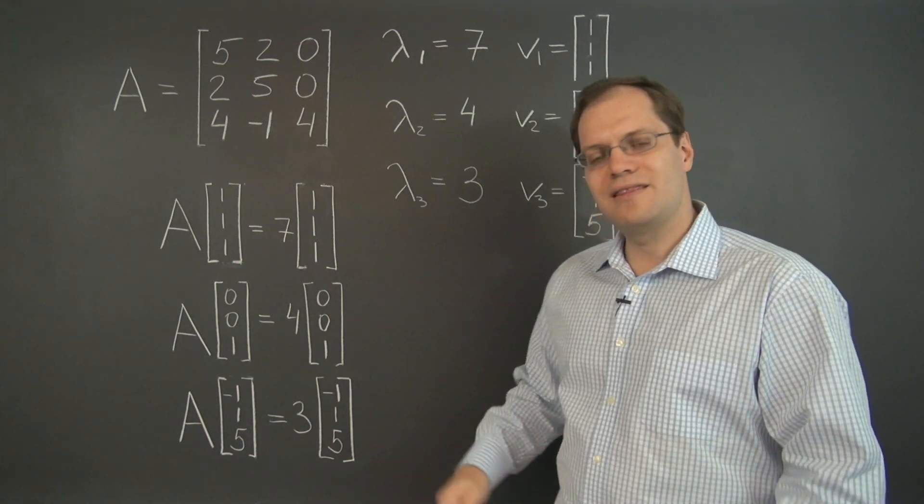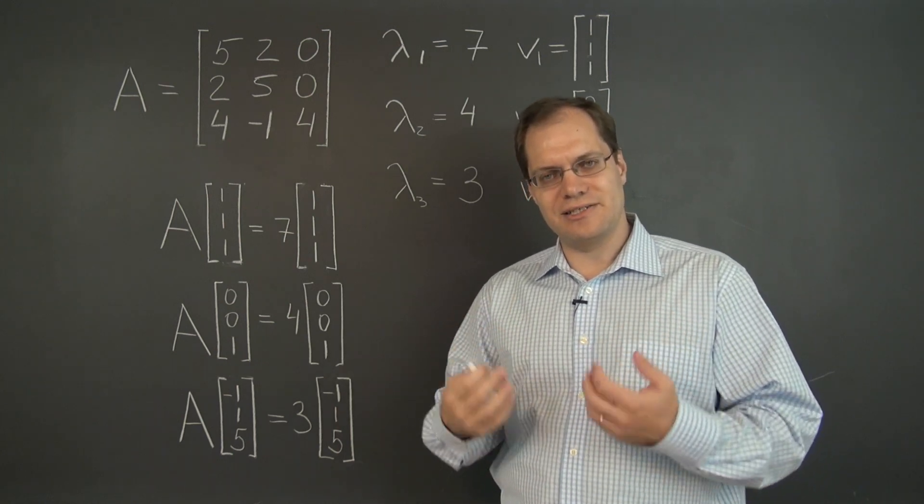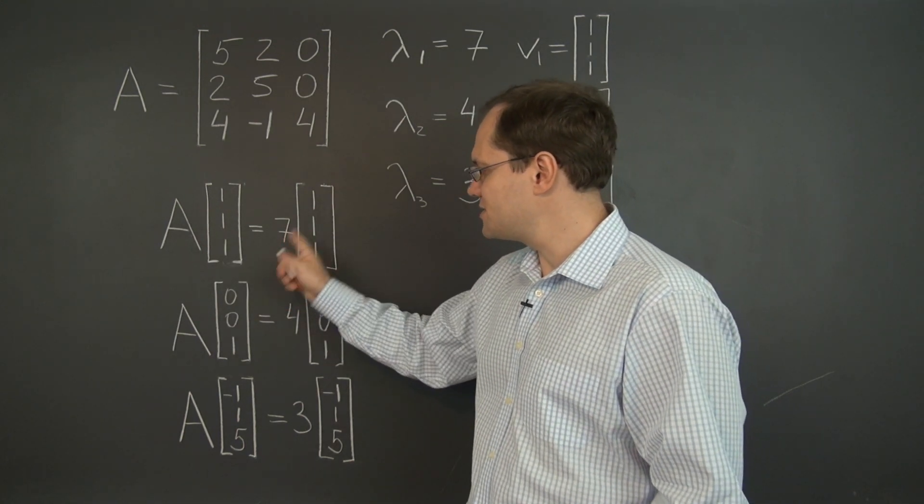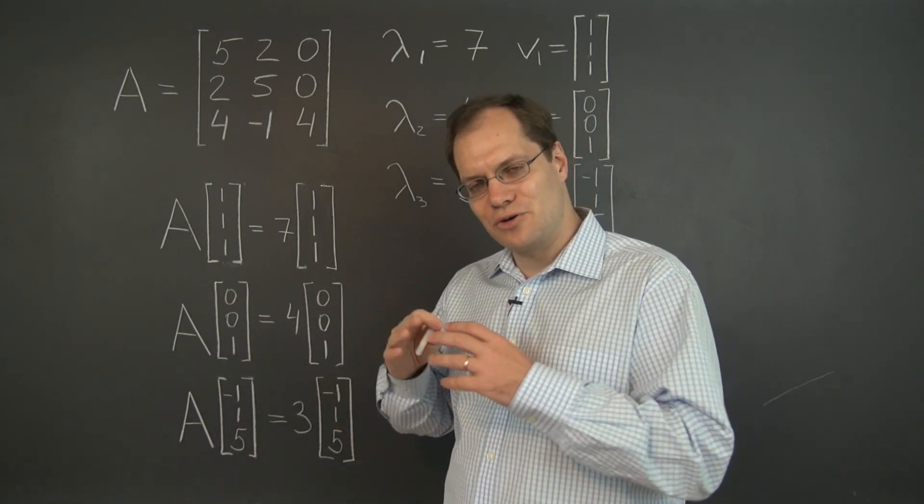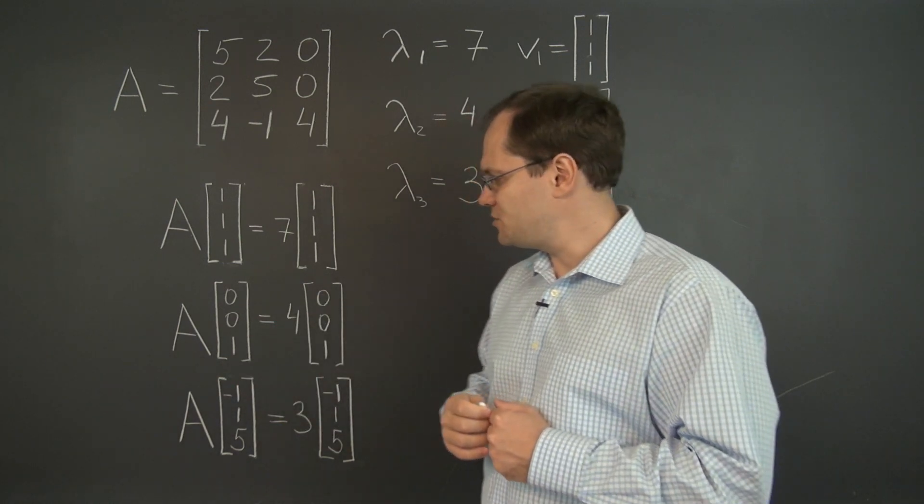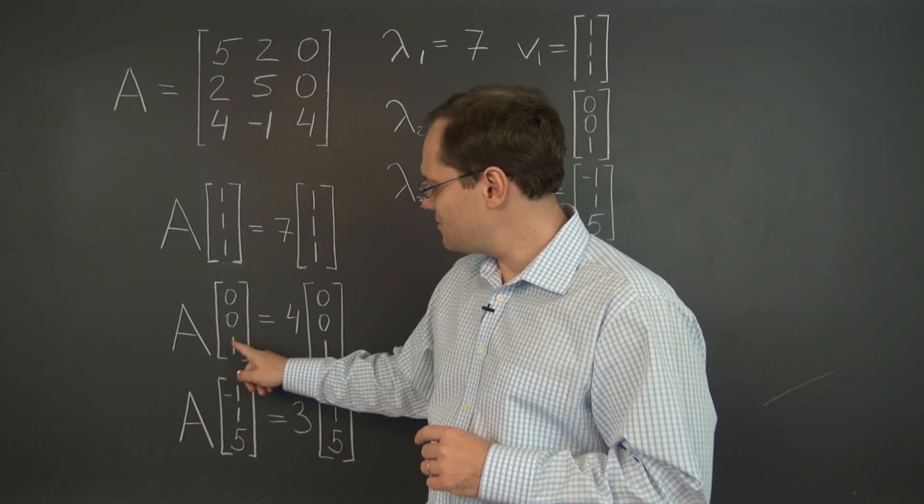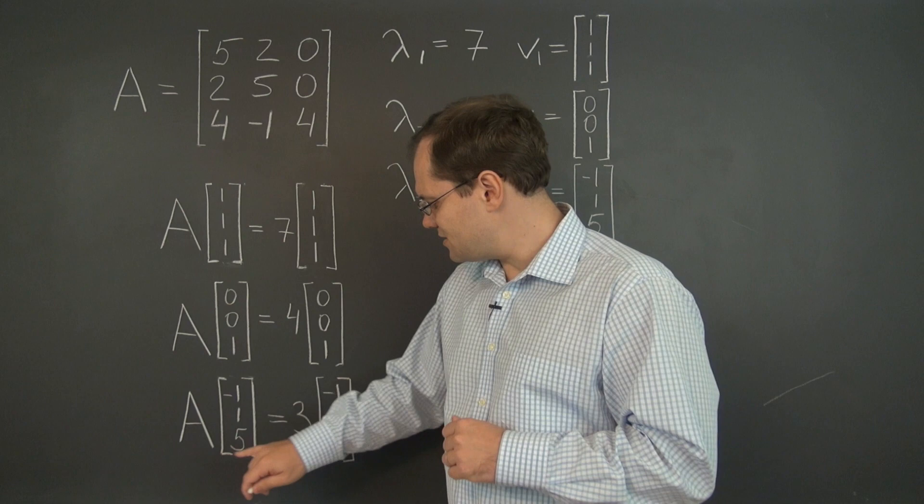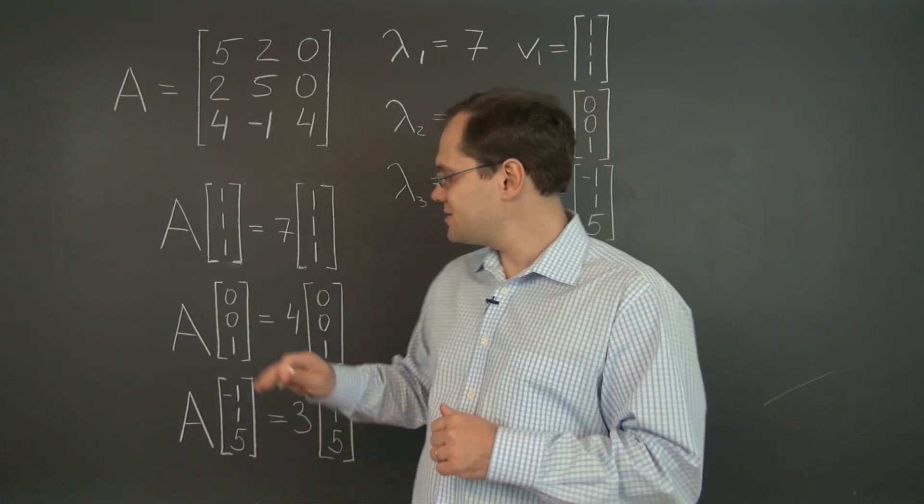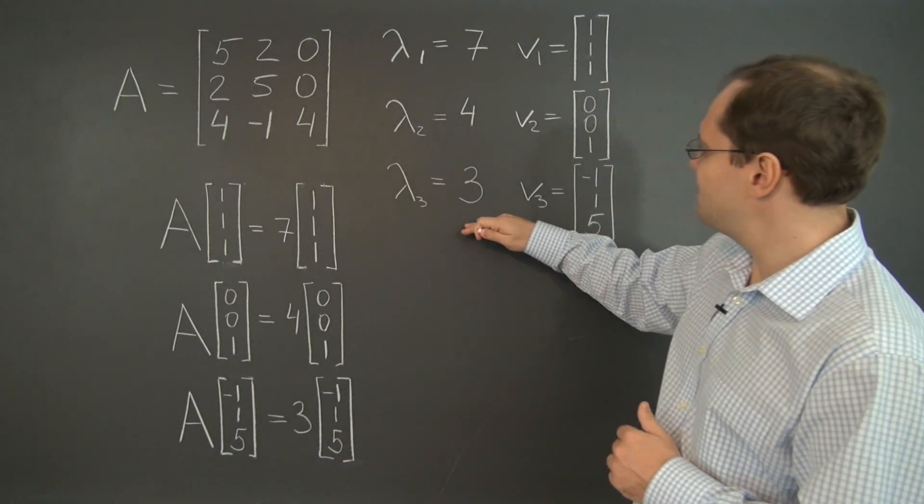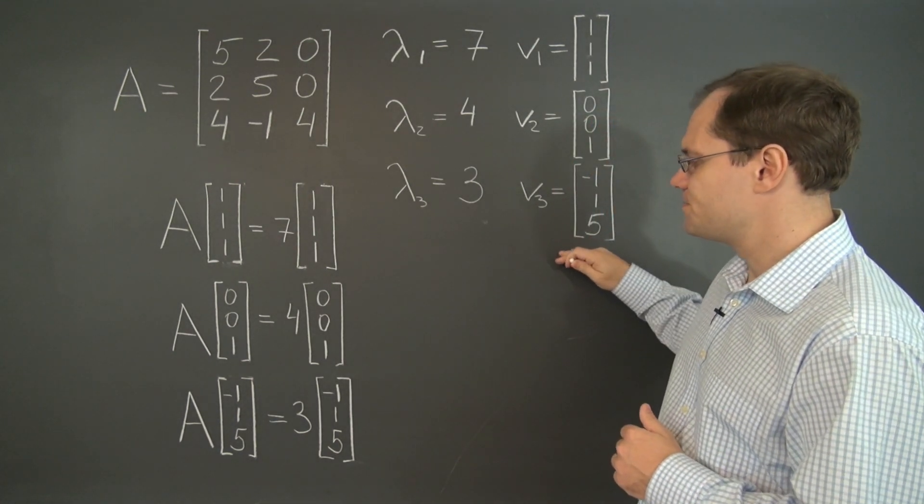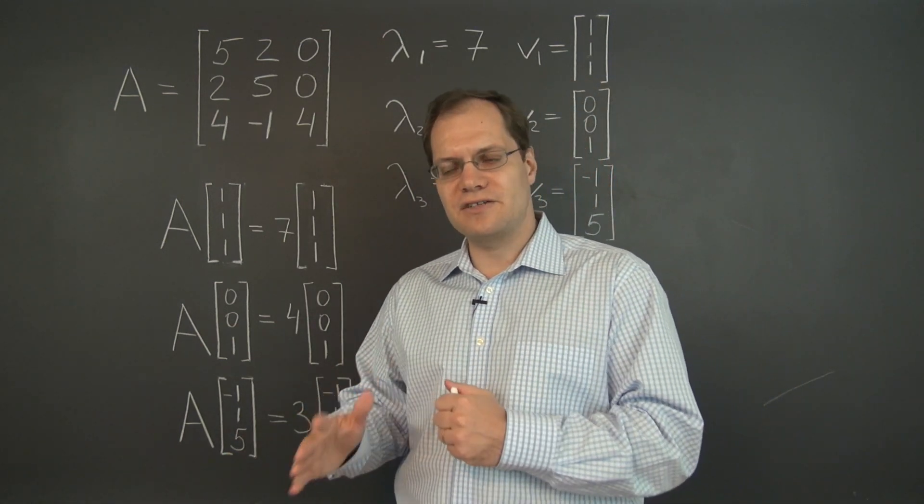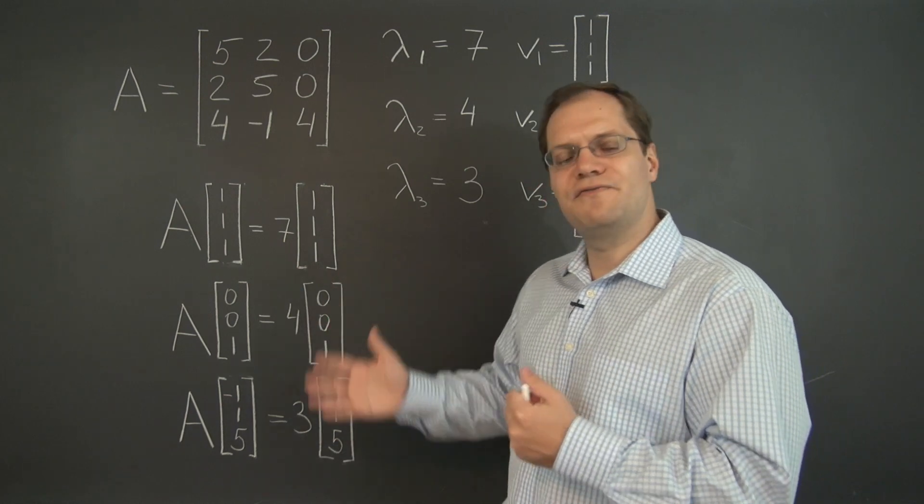So what are we going to do with these eigenvalues and eigenvectors? Well, let's first capture the statement that these are indeed eigenvalues and eigenvectors algebraically. And that means that A times this matrix equals 7 times the vector. A times this vector is 4 times the input vector. And finally, A times this vector is 3 times that vector. That's the algebraic expression for the statement that these are the eigenvalues and eigenvectors. So we capture those properties in three vector equations.